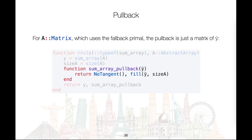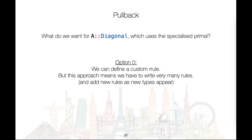Let's now examine a pullback for a dense matrix which uses the fallback primal method. The pullback is simply a dense matrix the size of the original matrix A filled with ȳ. The contentious part is the pullback for a diagonal matrix which uses the specialized primal method. The naive solution is to define a custom rule; however, this means we have to define a custom rule for each primal method, and we also have to add new rules whenever new types are added. Clearly, this is not a scalable solution.